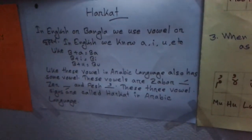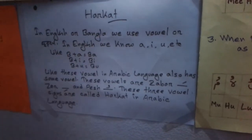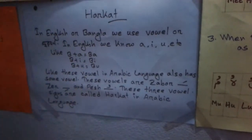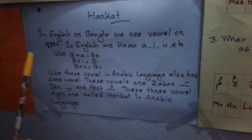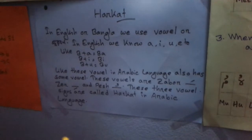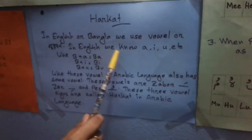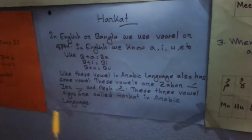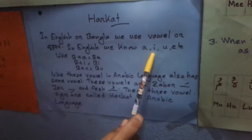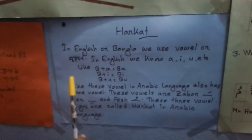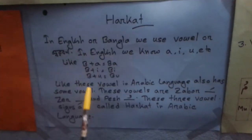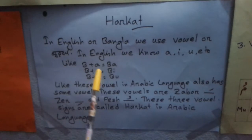In English or Bangla we use vowels or Shadogarni to make pronunciation easy. In English we also know there are 5 vowels: A, I, U, etc.